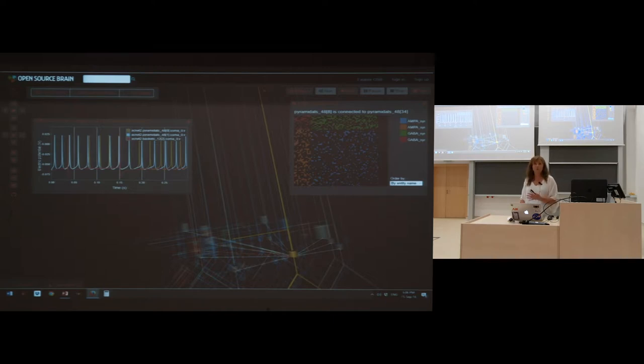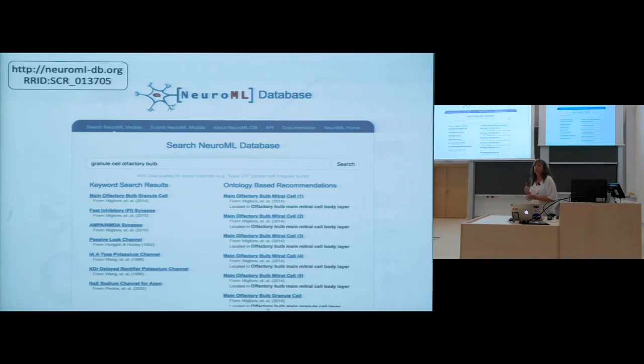This project NeuroMLDB is very complementary to Open Source Brain. It has like a different purpose. Whereas Open Source Brain has these projects that are constantly changing, it's built on GitHub, NeuroMLDB is more about a model that you think of as being fixed. It's maybe a published model. The models are associated with publications. So we want to have very efficient, quick search. You can go there and do a search. We have a keyword search. But it's also based on ontologies around neuroscience.